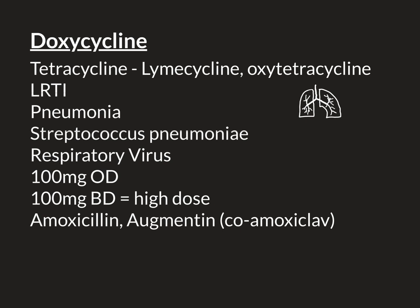Despite being a valid treatment option when an individual can take an oral antibiotic, doxycycline is not usually viewed as first-line treatment. First-line treatment would be penicillin antibiotics such as amoxicillin, or amoxicillin with clavulanic acid — co-amoxiclav, usually called Augmentin — which are available as oral medicines. Doxycycline is instead used as an alternative when an individual is penicillin allergic, is clinically well, and can be treated with an oral medicine in the community. In that case, doxycycline is an excellent option.